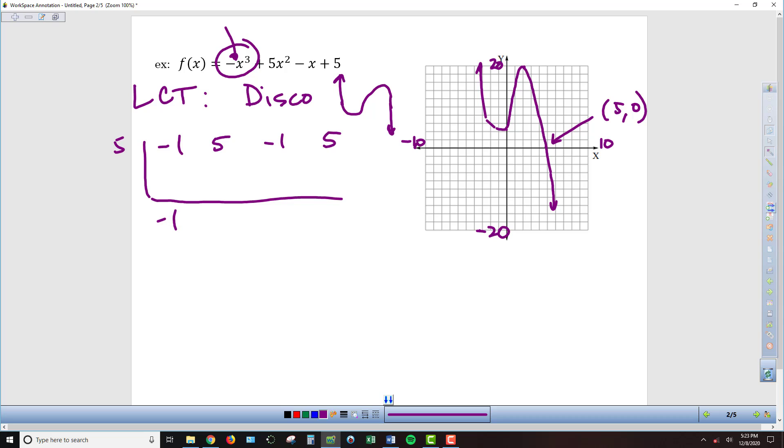In the vertical direction, we bring down the negative 1. 5 times negative 1 is negative 5. Add in the vertical direction, we get 0. 5 times 0 is 0. Negative 1 plus 0 is negative 1. Then 5 times negative 1 is negative 5, which indeed leads us to a remainder of 0.